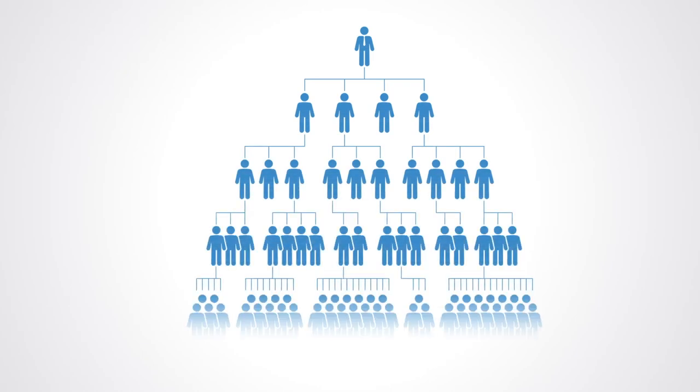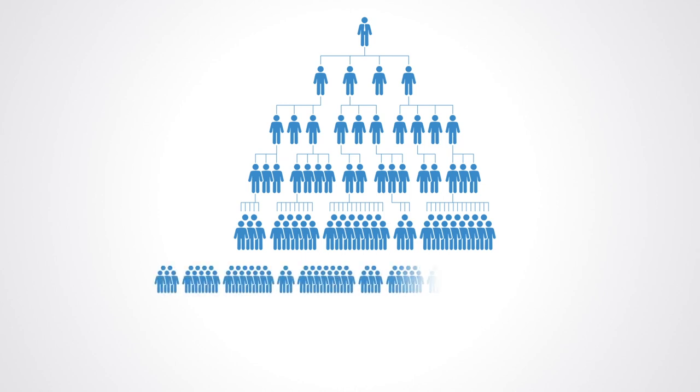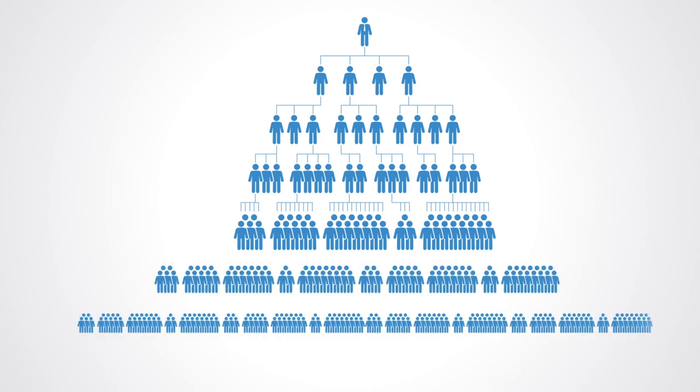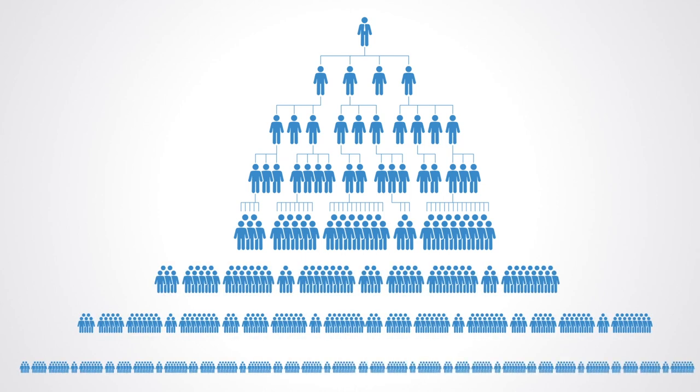Likewise, centralized systems require many layers of hierarchy and regulation to ensure the people are acting according to the mandate of the organization. As the system gets larger, more and more layers of bureaucracy build up.